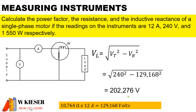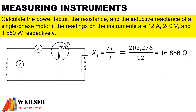It is the supply voltage of 240 volts squared less the volt drop across the resistor squared, and it means that the volt drop across the inductor is 202.276 volts. Now that we have the volt drop across the inductor, we can calculate the inductive reactance by dividing the volt drop by the current in the circuit. Therefore the inductive reactance will be 16.856 ohms.